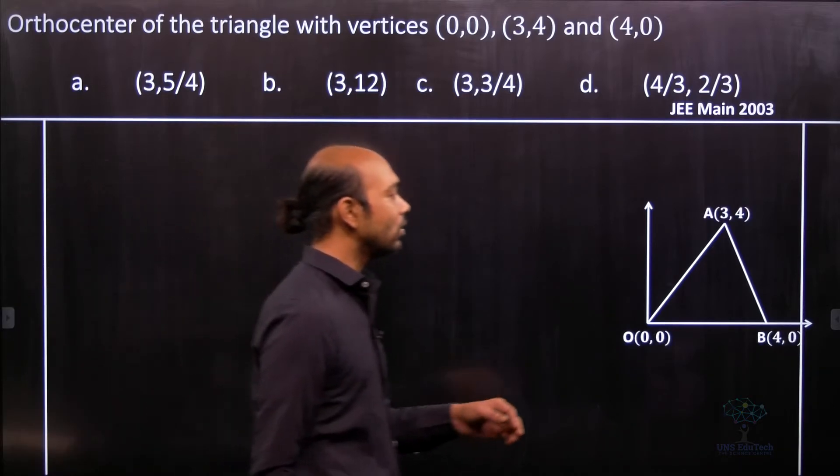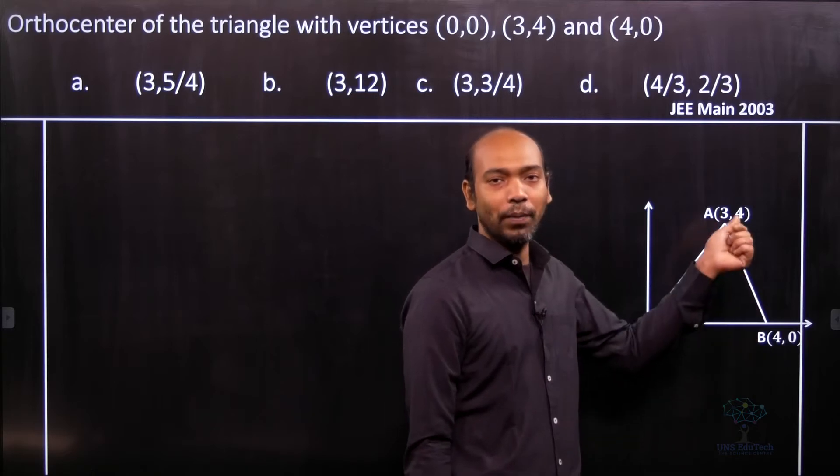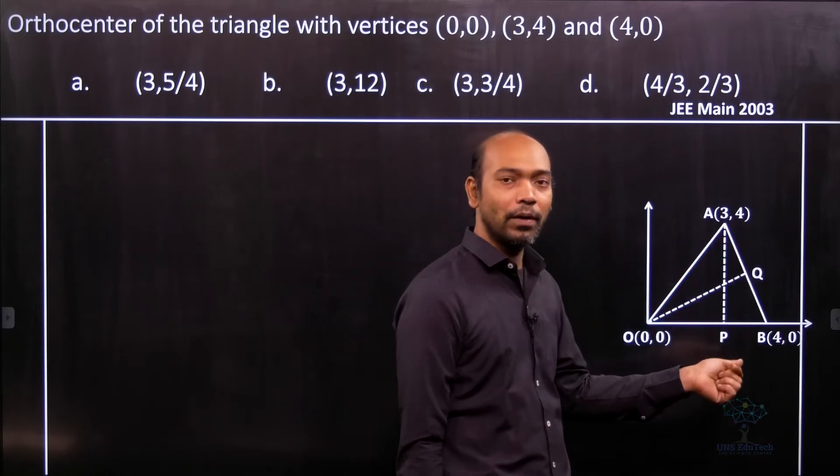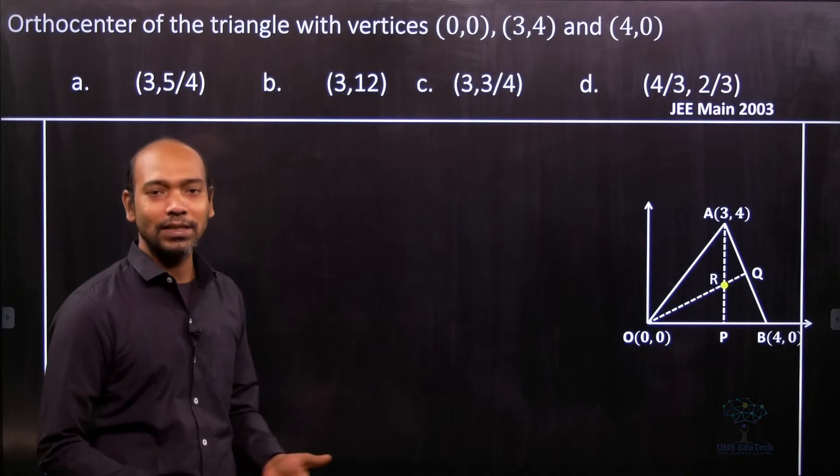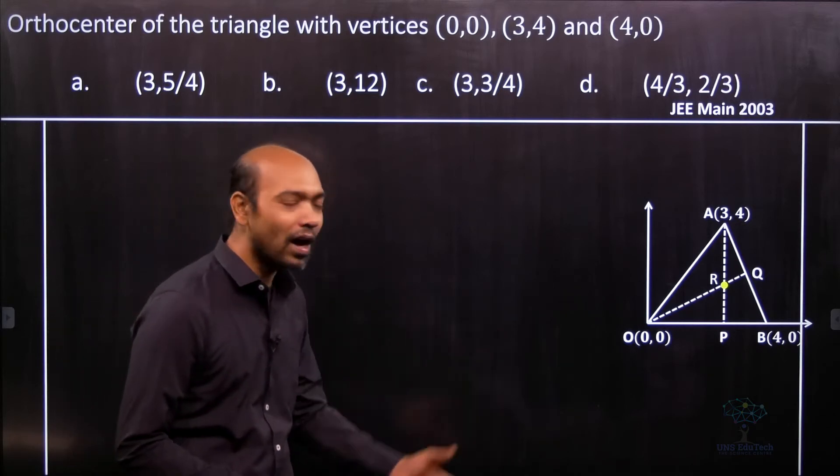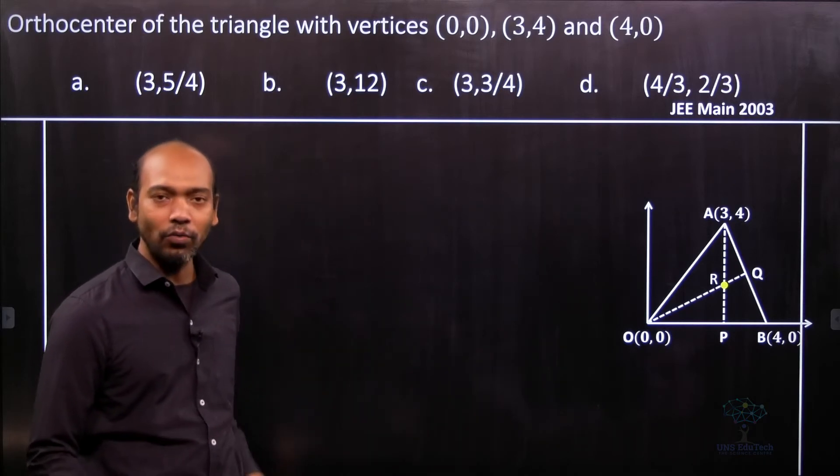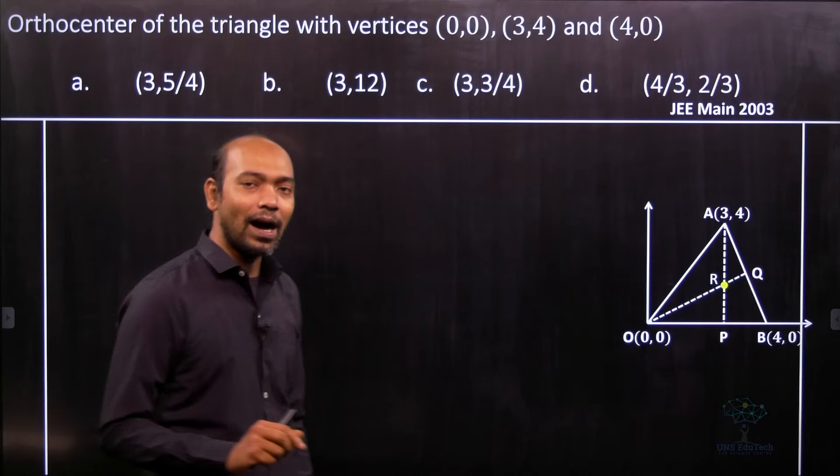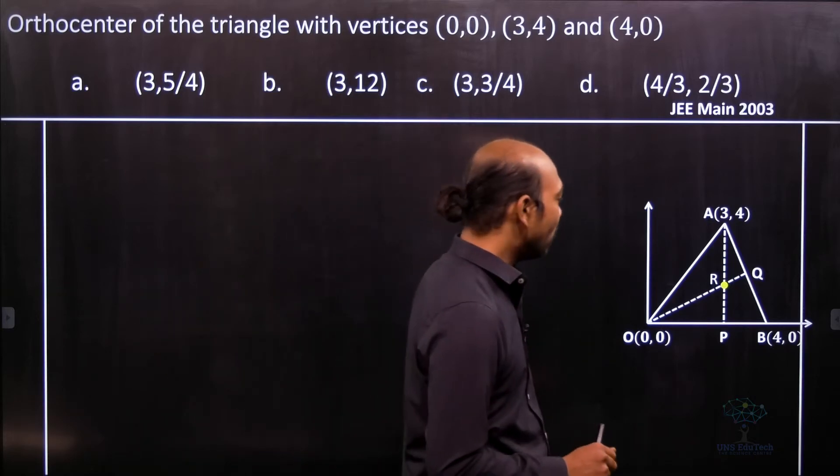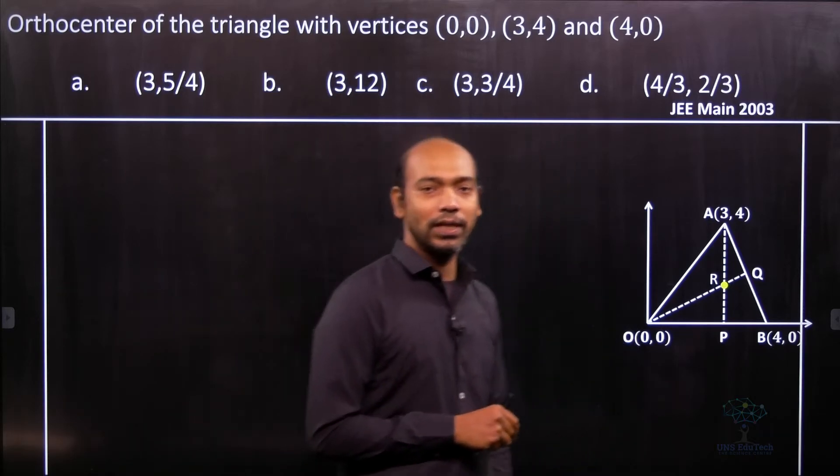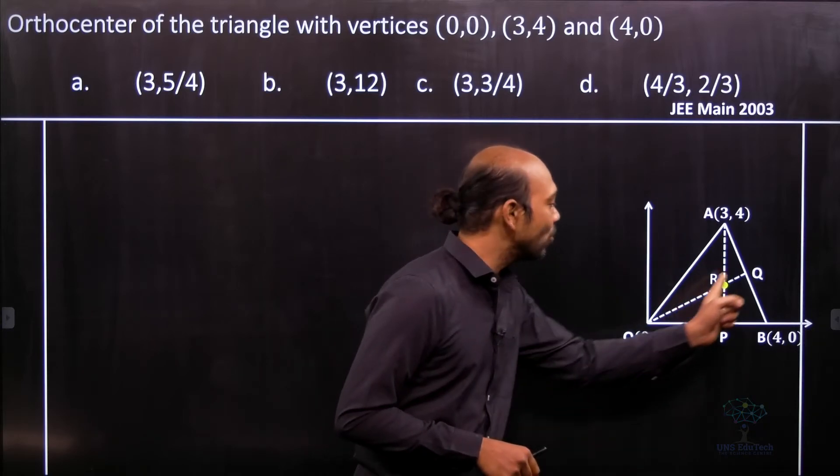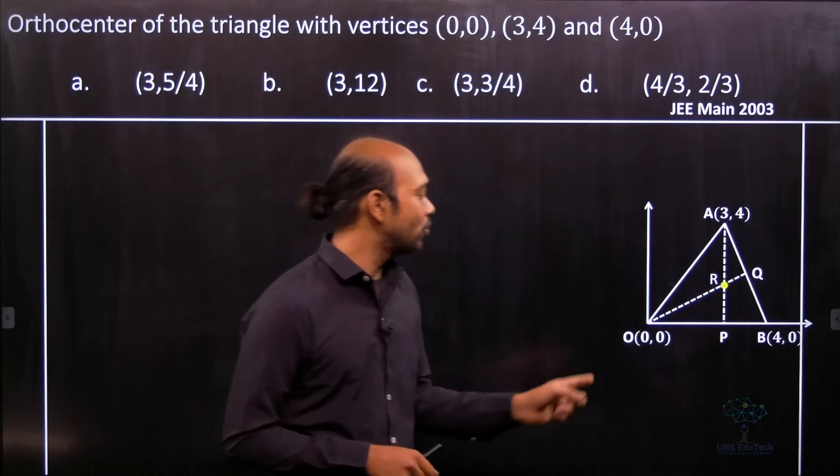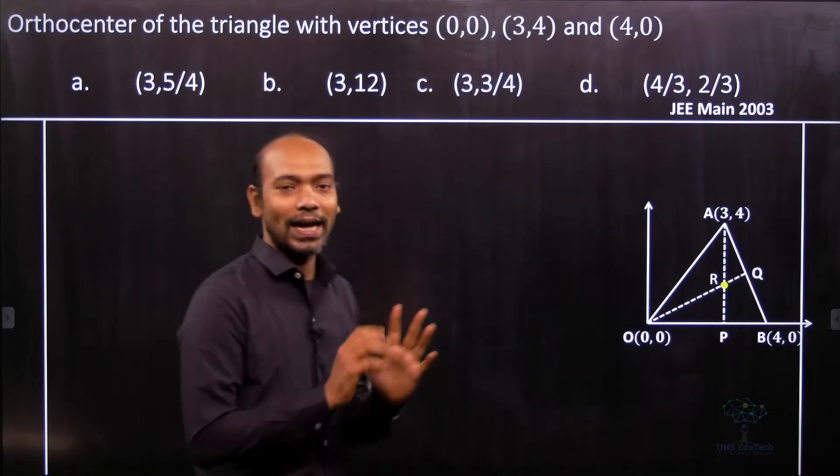Now to find out the orthocenter we need to drop the perpendiculars. So here we drop the perpendicular and obviously they intersect at some point. Let's mark that point and name it as R and we have to find out the coordinate of R. And R is the orthocenter here. Now see that by the construction as you've seen in the animated thing you can easily understand AP and OQ are perpendicular to OB and AB. So let's write that.